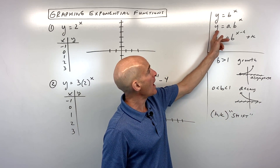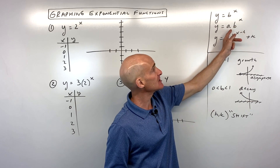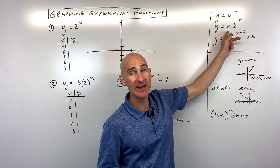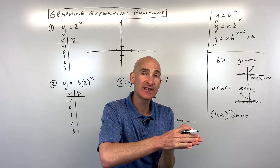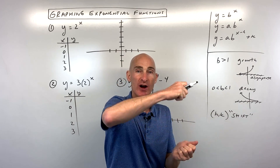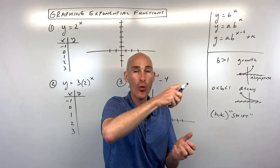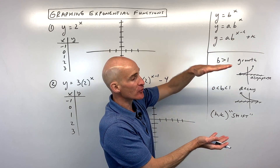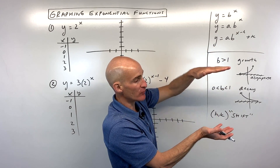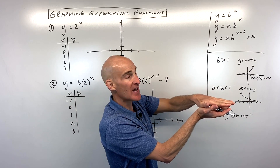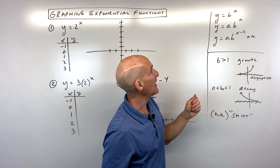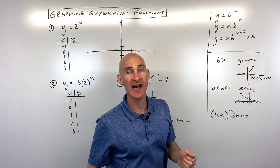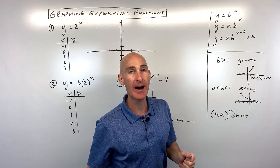The next form is y equals a times b to the x. This coefficient a in front — if it's greater than one, we say it's a vertical stretch, stretching the graph in the y direction. If a is between zero and one, it's a vertical shrink, compressing it toward the x-axis. And if it's negative, you're reflecting over the x-axis, making all those y values the opposite.